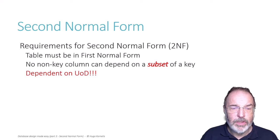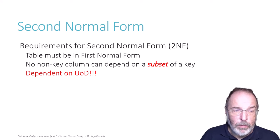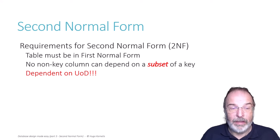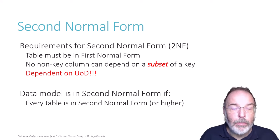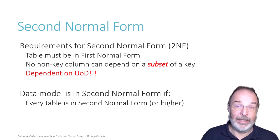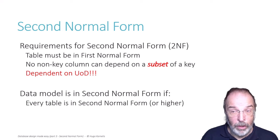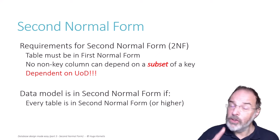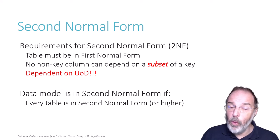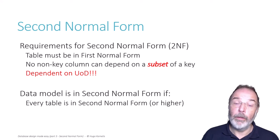These requirements apply at the table level. Second normal form, like first normal form, is always checked at the table level — every individual table must obey those rules. If you want to talk about your entire data model, then your data model is in second normal form if every table in it is in at least second normal form. If you have 100 tables and 99 are in second normal form but just one is in first normal form, then your data model is still only in first normal form.